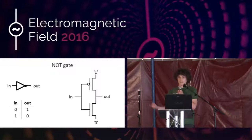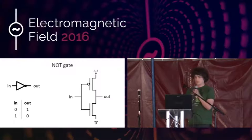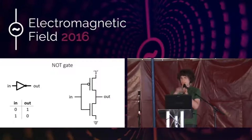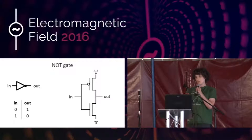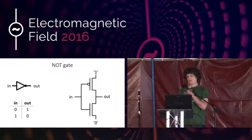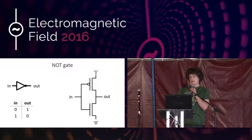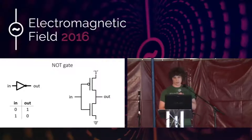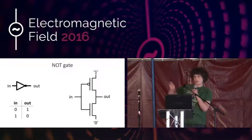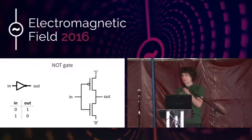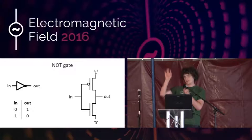We implement the NOT gate like this: we take two transistors, one PFET and one NFET. We put the PFET at the top connected to a logical one, and the NFET at the bottom connected to zero. We connect both gates together to the input, and both drains together to the output. If we put a one on the input, the PFET will be off and the NFET will be on, so the output is connected to zero. If we put a zero on the input, the PFET is on and the NFET is off, so the output is one. Notice we use a PFET at the top and an NFET at the bottom because physically a PFET is much better at switching ones, and an NFET is much better at letting through zeros.